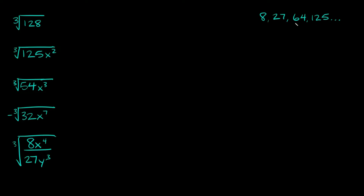So these are a few of them: 8, 27, 64, 125, and there's a bunch more. These are just numbers that we can easily take the cube root of. For example, the cube root of 8 is equal to 2, the cube root of 27 is equal to 3, the cube root of 64 is 4, and 125 is 5.